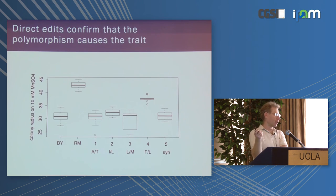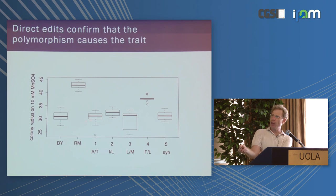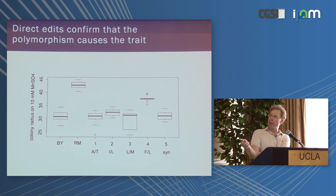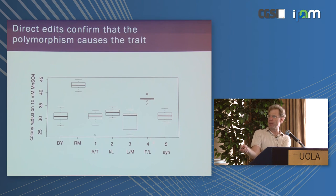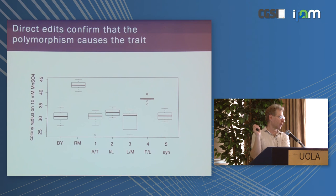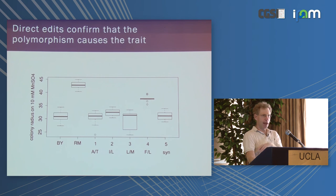We then went ahead and tested this experimentally. Here are the two parent strains and their difference in growth. We individually moved each of the five candidate mutations one by one from the vineyard parent — which grows well — into the lab parent — which doesn't. For the four predicted to have no effect, nothing happens. For the one predicted to have the effect, you see a move most of the way toward growing as well as the vineyard parent, validating this very fine-resolution mapping ability.